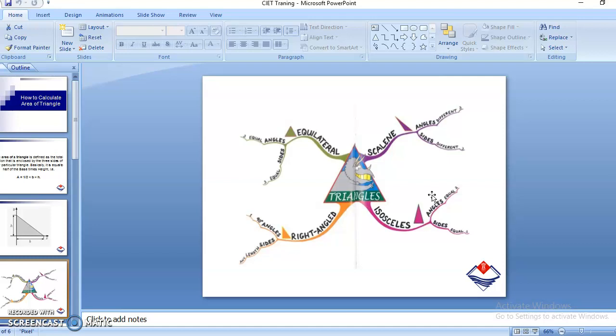In the scalene type of triangle, we are having three different angles and three different sides. In the equilateral triangle, we have three equal angles, three equal sides, all everything same. In the right-angled triangle, we are having one angle at 90 degrees, and the sides can be of any length.